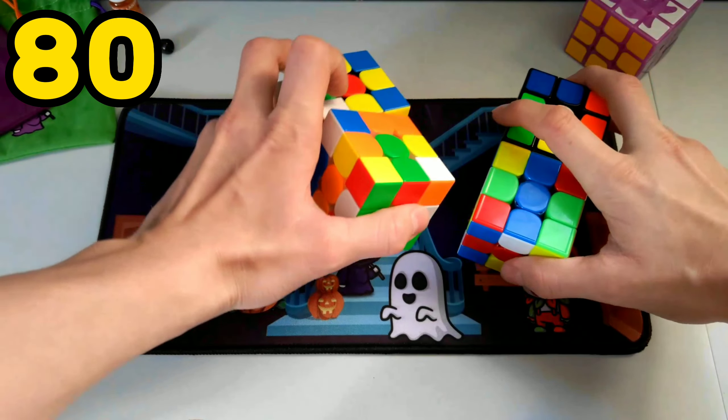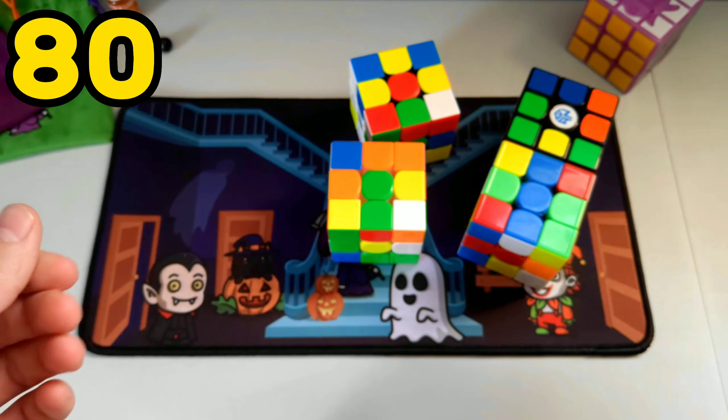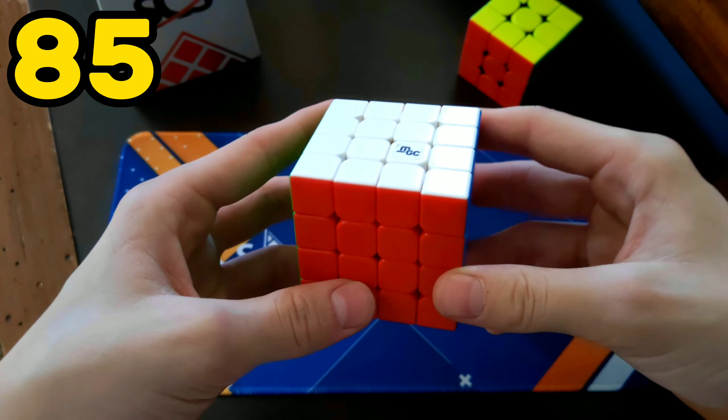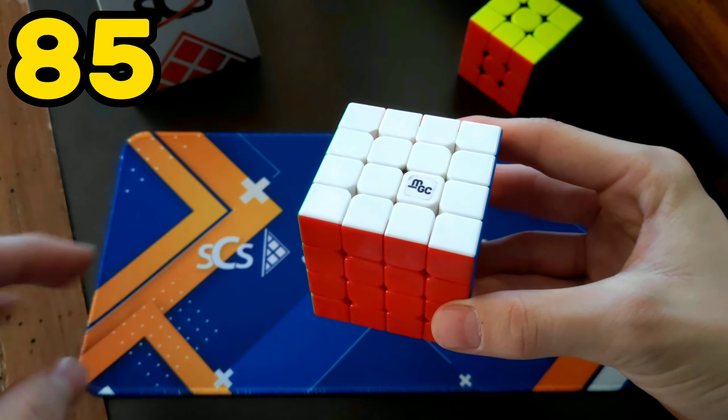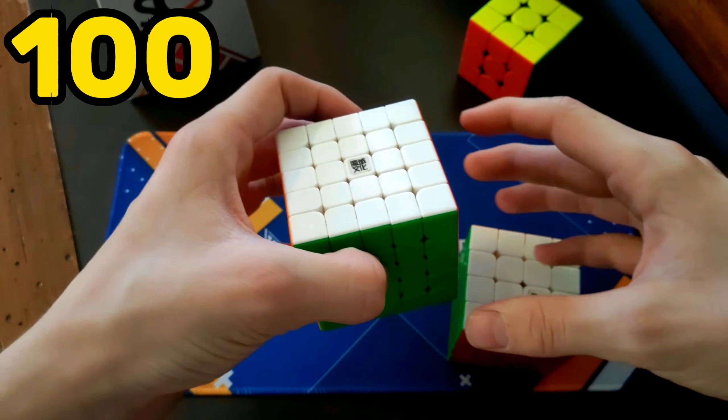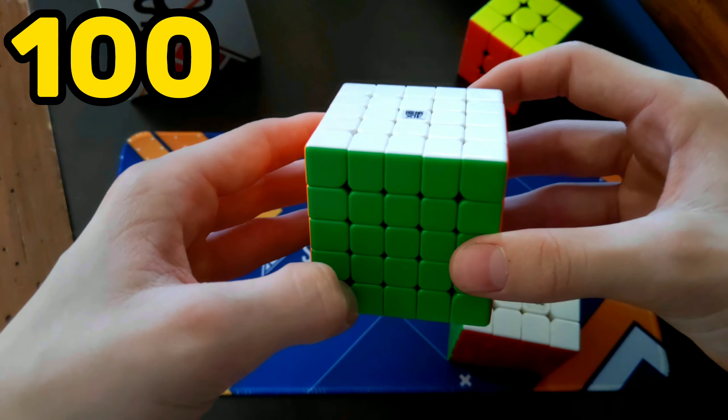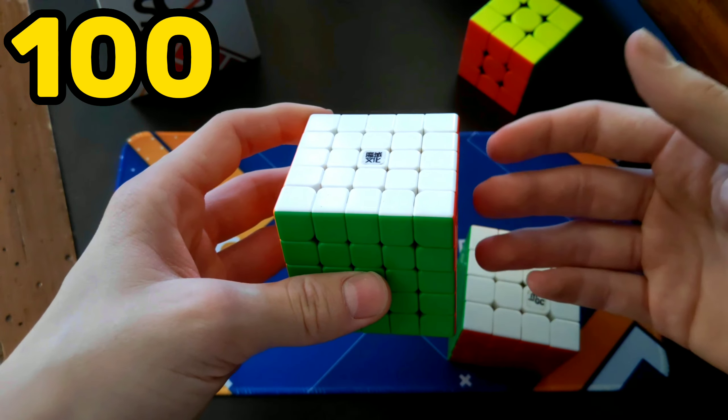3x3 multi-blind is the same as regular blindfold, except you have multiple cubes. 4x4 blindfold. We're getting pretty big at this point, but guess what? There's also a 5x5 blindfold. I'm just speechless at this point. I still don't understand how they memorize all of those pieces.